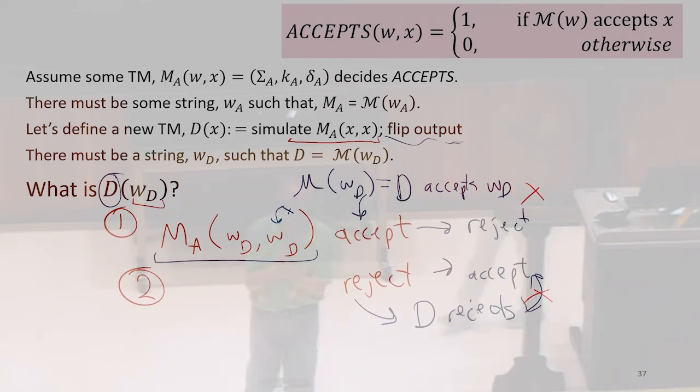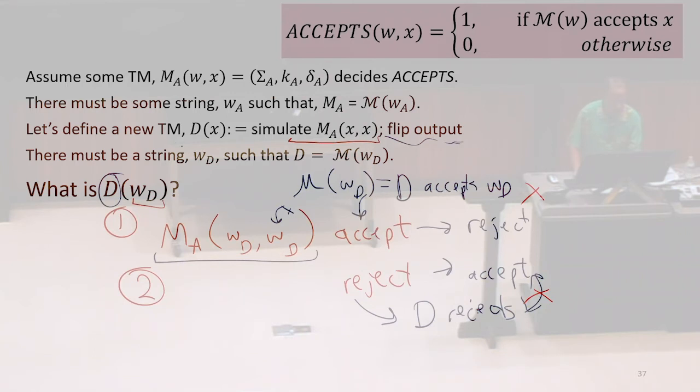We have a problem. So the contradiction is on every input, D either accepts or rejects. Because we assumed there was some Turing machine that decides accepts. So it always outputs either 0 or 1. And we can use that to construct a machine that would output the result of simulating this machine and flipping its output.